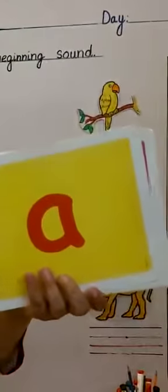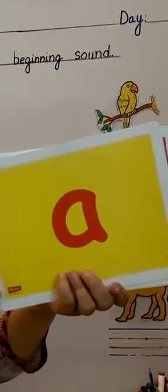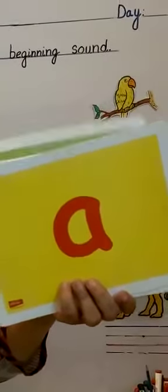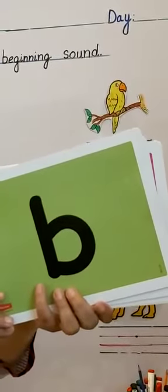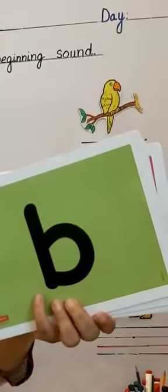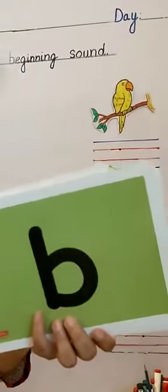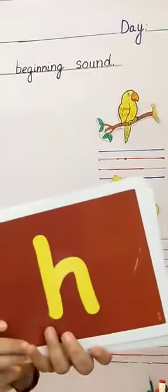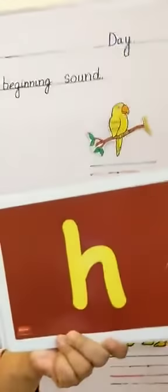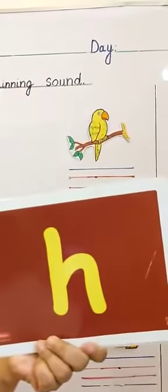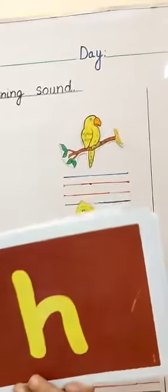The name of the letter is A and A says Eh. The name of the letter is B and B says B. The name of the letter is H. And what is the sound? H.